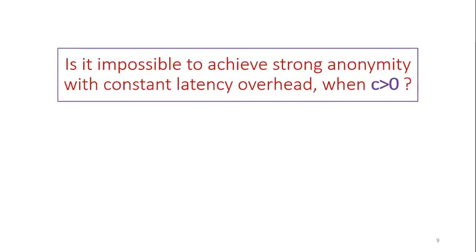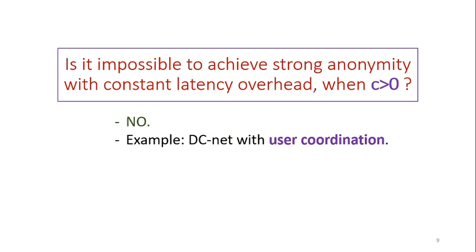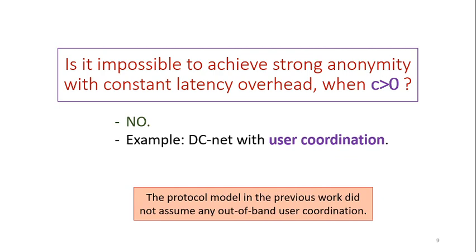But is it really impossible to achieve strong anonymity with constant latency when compromised nodes are present? That doesn't seem right, because we know there are protocols — for example, DCNet — that can provide strong anonymity even with constant latency overhead in the presence of compromised nodes. So what was missing in our previous work? We are going to define a general class of techniques called user coordination. The protocol model in the previous work did not assume any out-of-band user coordination, and a wide class of protocols — including DCNet-kind protocols — fall outside that previous model.